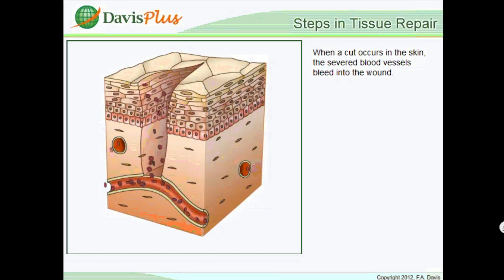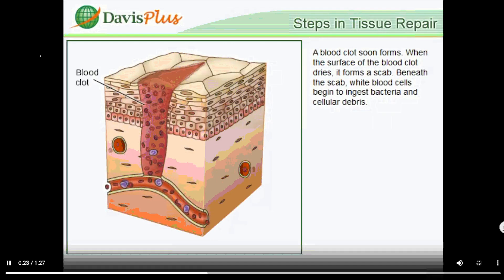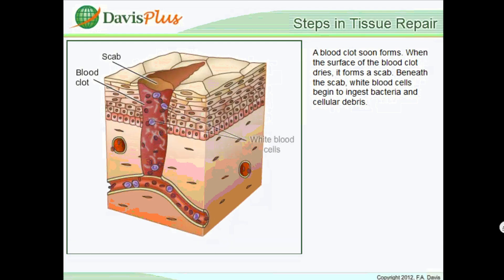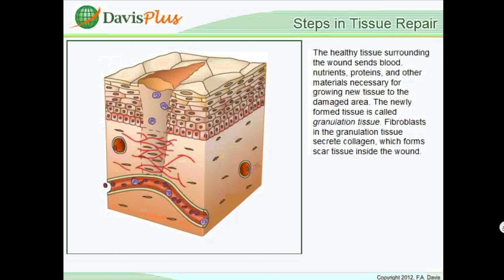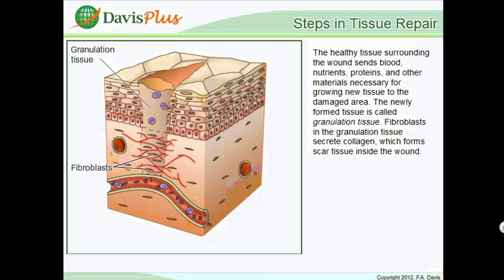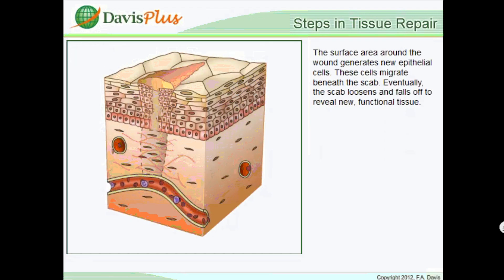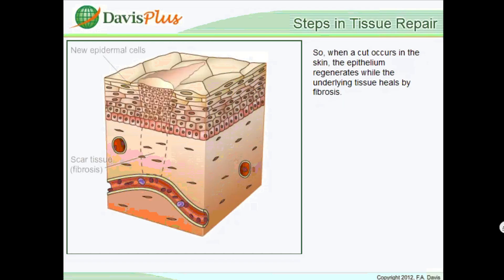When a cut occurs in the skin, severed blood vessels bleed into the wound and a blood clot forms. When the clot dries, it forms a scab. Beneath the scab, white blood cells ingest bacteria and debris while healthy surrounding tissue sends blood, nutrients, and proteins to the area. The newly formed tissue is called granulation tissue. Fibroblasts secrete collagen forming scar tissue, while the surface generates new epithelial cells that migrate beneath the scab until the scab falls off revealing new tissue.